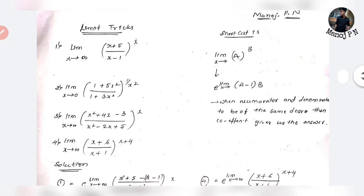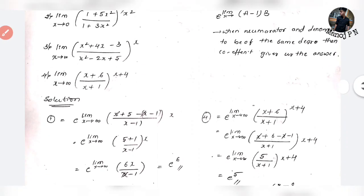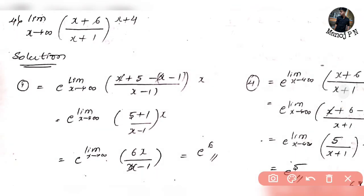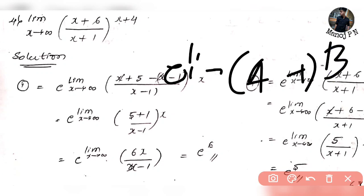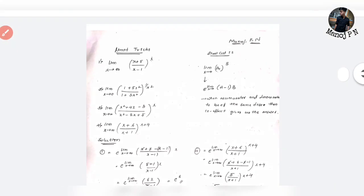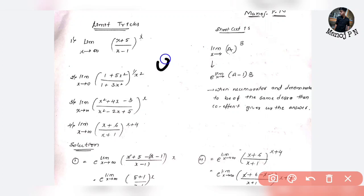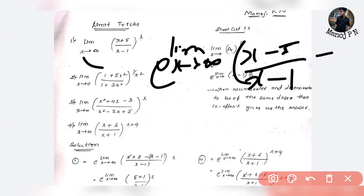Look at the first question: limit x tends to infinity, x plus 5 divided by x minus 1, whole raised to power x. If you apply the formula, the answer is e raised to power (a minus 1) into b. So here it becomes: limit x tends to infinity, and what you make is 1 minus 1, into x.